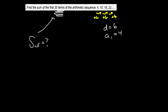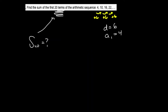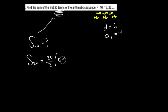So n is 20. Following this formula with n replaced by 20, I have a1, but I do not have an. So the sum of the first 20 terms is going to be 20 over 2 times a1, which is 4, plus a20, which I do not know. I have to find the 20th term.